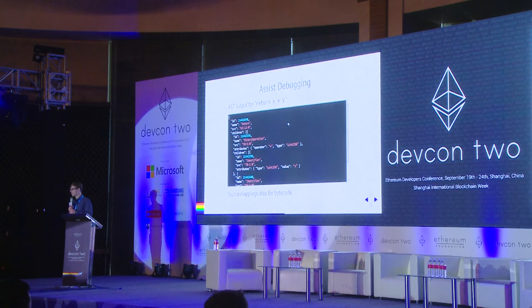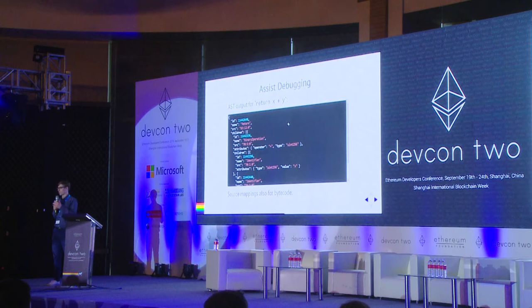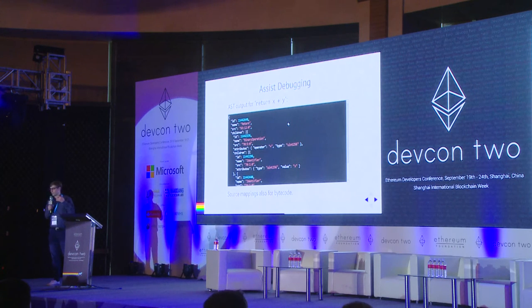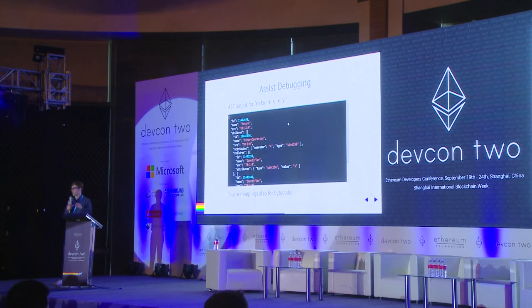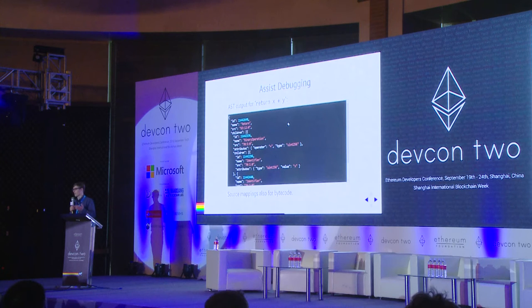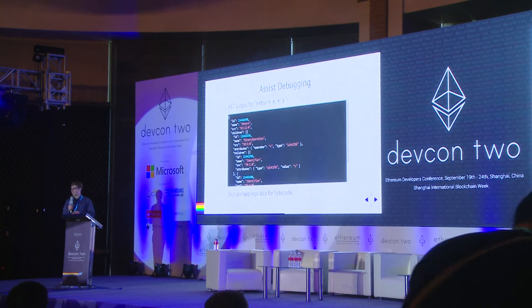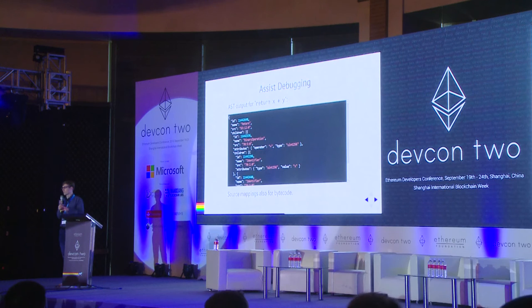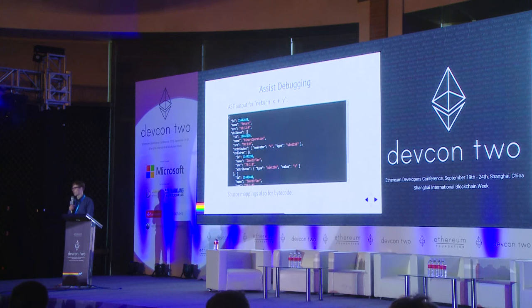That is very important for the debugger, because at any point when you debug a transaction, you know where you currently are in the source code. You can also do more analysis on the AST, perhaps analyze it for insecure patterns, and notify the user pointing to an exact location in the source where the problem is.